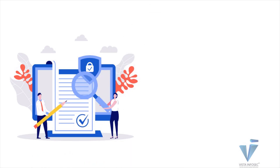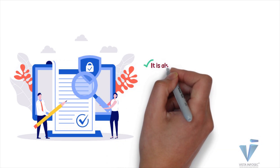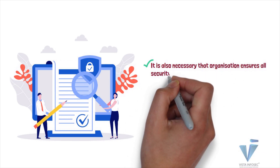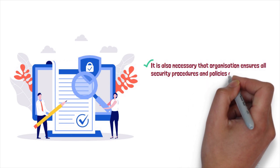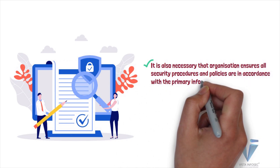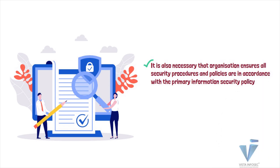There must be at least a yearly process to revisit and update all the policies set by the organization. It is also necessary that the organization ensures all security procedures and policies are in accordance with the primary information security policy. It is also important to note that these policies and procedures are documents that guide and enforce the security rules within and outside the organization.